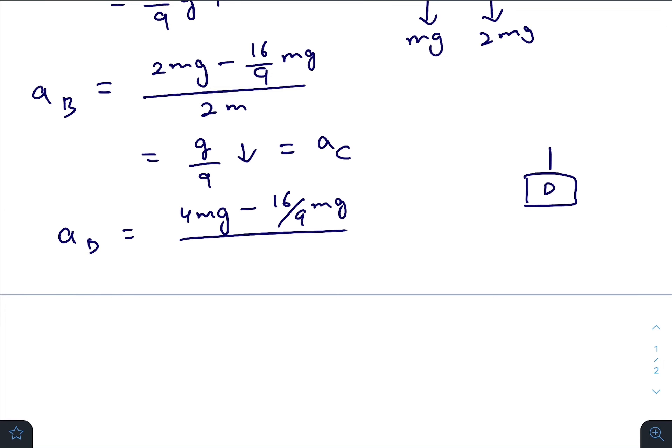For block D, 16 by 9mg, that is T by 2, and here it will be 4mg, divided by 4m, will give you 5g by 9 downwards.